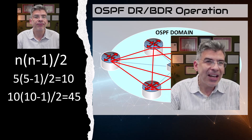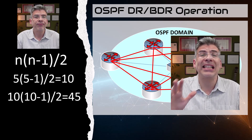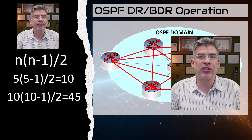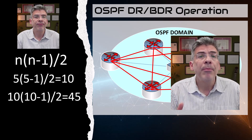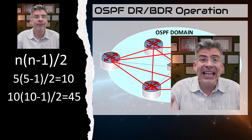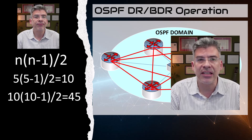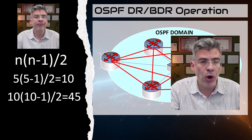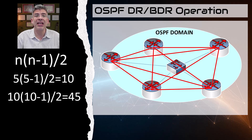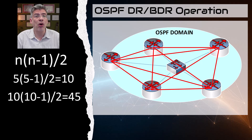Actually, if you want to be mathematically accurate, the number of adjacencies grows quadratically, not exponentially, which is still fast but not as fast as exponential growth. But in any case, it is a drastic increase in the number of adjacencies. So the more adjacencies we have, the more network traffic we have, the more CPU and memory is being used by each router, and thus the operation of OSPF quickly becomes inefficient and overwhelming.